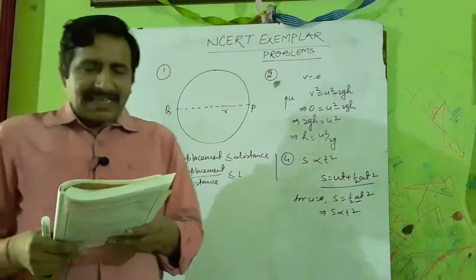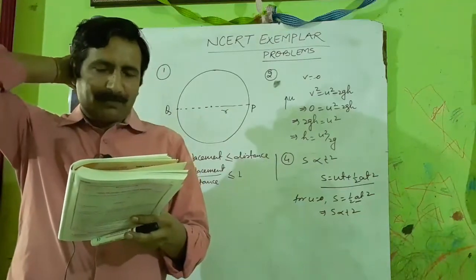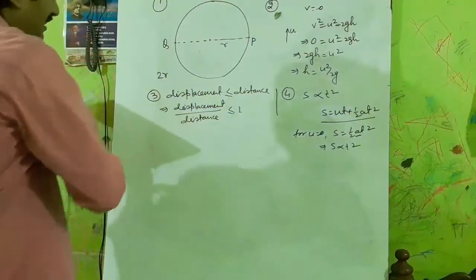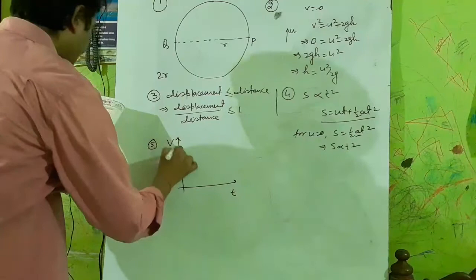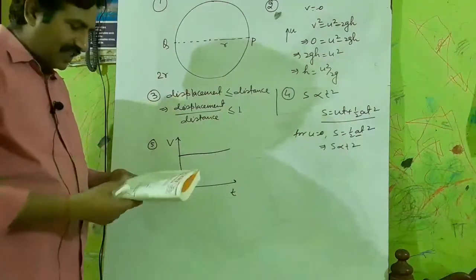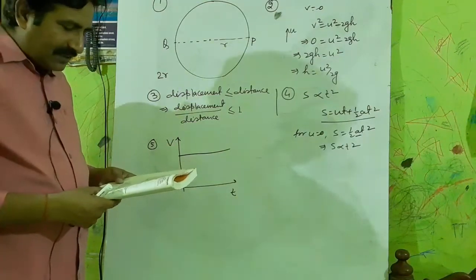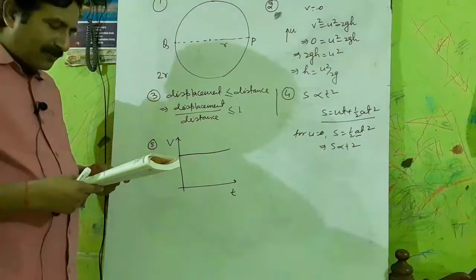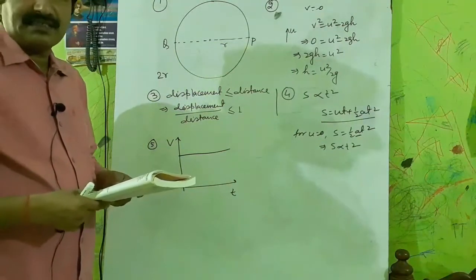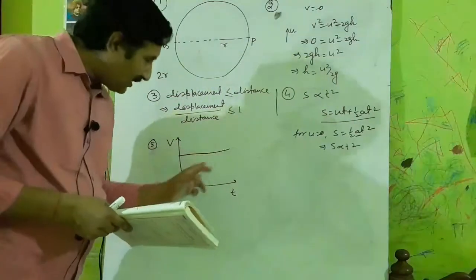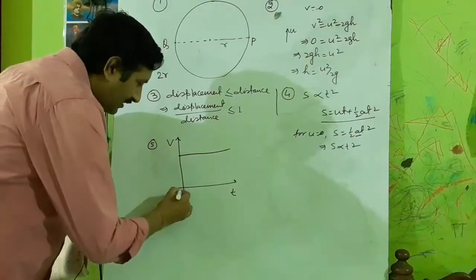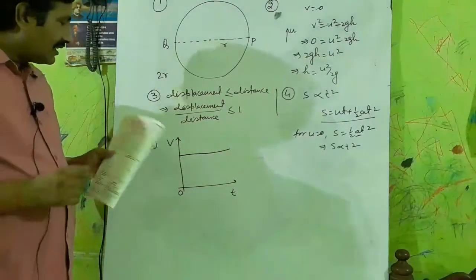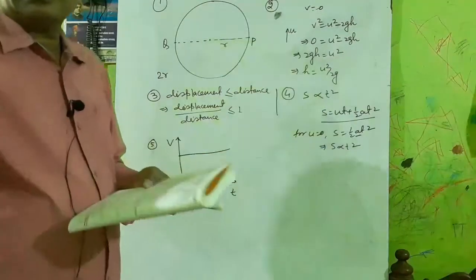Question five: From a given VT graph it can be inferred that the object is — the VT graph is a straight line parallel to the time axis. This is a speed-versus-time graph where the value is constant throughout. A constant velocity on a VT graph means it is uniform motion. The answer is C — uniform motion.